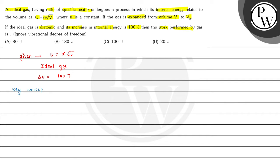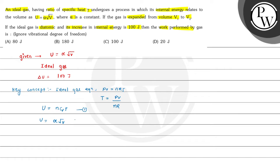We will write our key concepts. The ideal gas equation is PV equals nRT, and the internal energy is U equals nCvT. From the ideal gas equation, temperature T equals PV divided by nR. And we also have U equals alpha times the square root of V. This is equation 1 and that is equation 2. We can equate both equations.